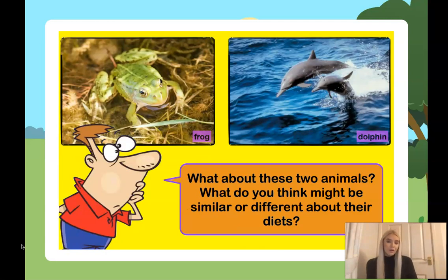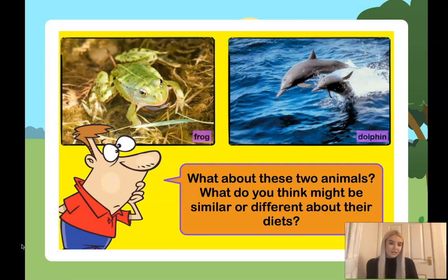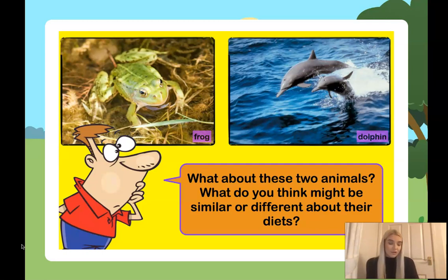Moving on — on the left we've got a frog and on the right a dolphin. What do you think might be similar or different about their diets? Dolphins eat other animals, like fish and sea creatures, and frogs eat insects too. So they're actually similar because they both eat other animals.